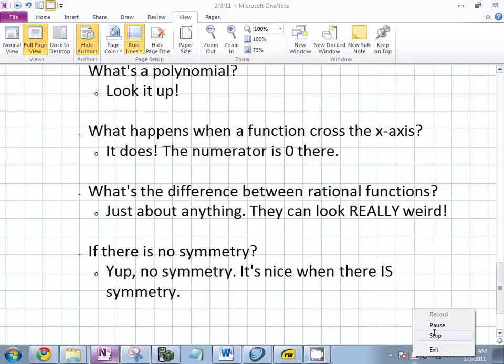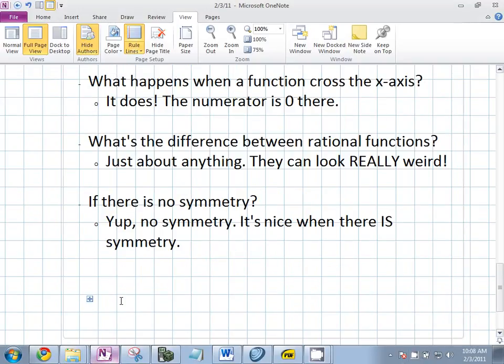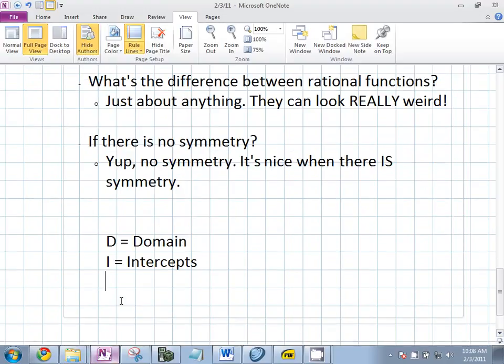I have a handout for you. Very simple starting point. D-I-S. D represents Domain. I represents Intercepts. How many kinds are there? X and Y. What does S represent? Symmetry. We're going to start here. So, let's look at R1.